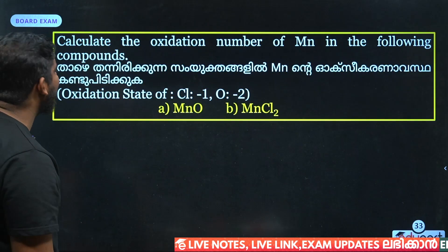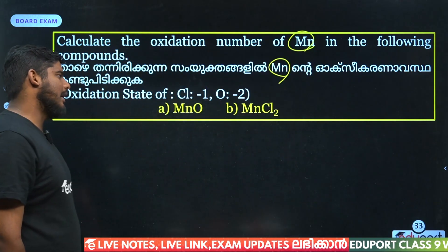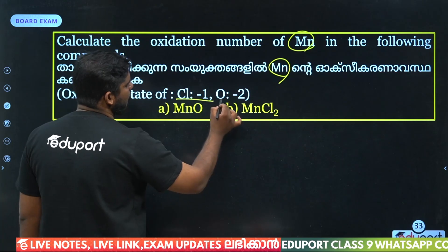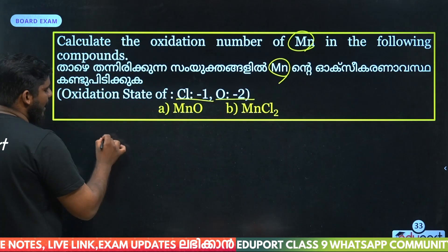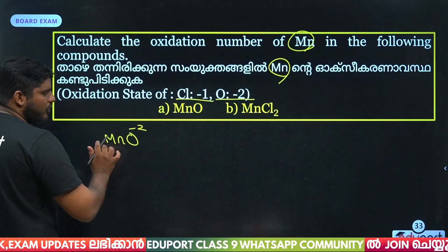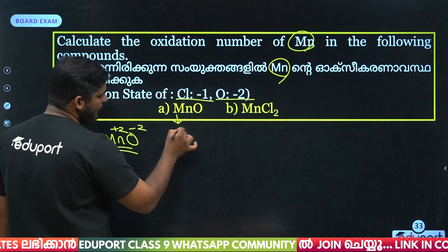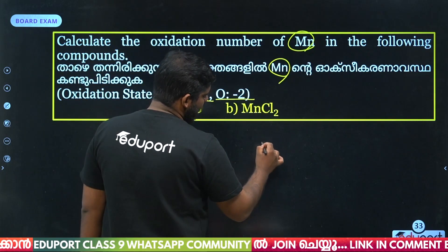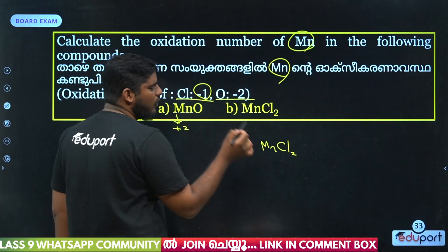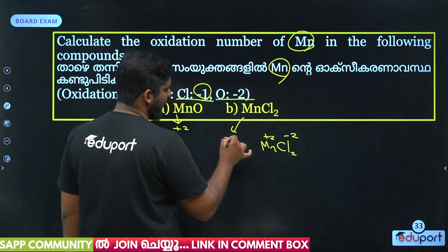Calculate the oxidation number of manganese in the following compounds. If you put the oxidation number of manganese in Mn — in the oxidation. For MnO: oxygen is minus 2, so we get MnO — oxygen minus 2, if you want to get zero, it's clear — plus 2. So what is it? Plus 2. MnCl2 has one chlorine minus, anti-chlorine minus 2, then plus 2. So this is plus 2.